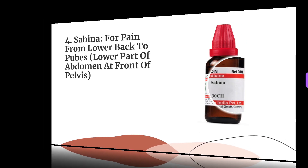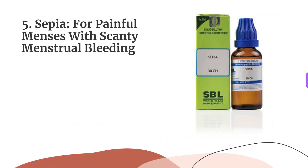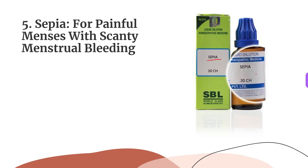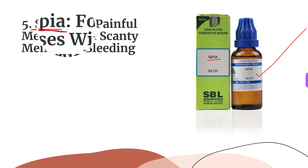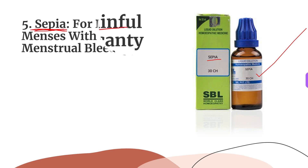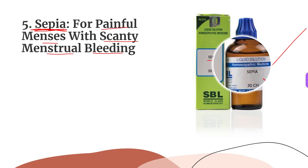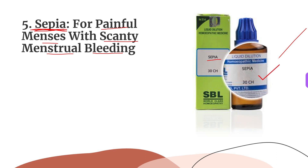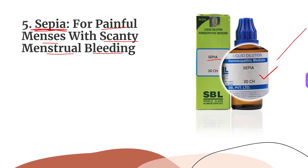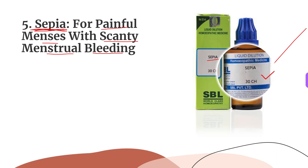The fifth medicine is Sepia, for painful menses with scanty periods. The main characteristic indicating this medicine is a bearing-down sensation in the pelvis, as if the pelvic organs will come out of the vagina. Some women needing it may experience one-sided headaches during menses. Sepia is also an important medicine for uterine fibroids and pelvic inflammatory disease (PID). One dose in 30 potency can be taken once a day to relieve pain and improve blood flow; do not repeat it frequently.